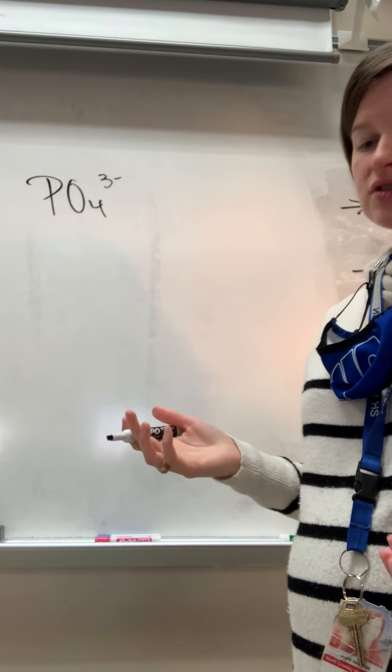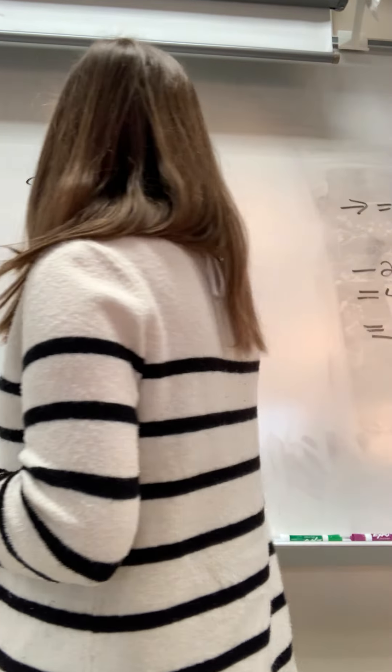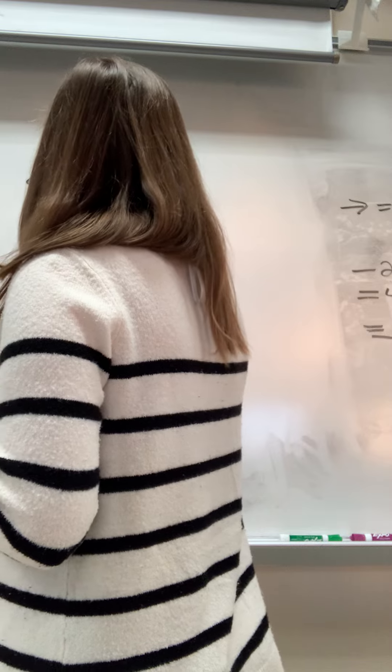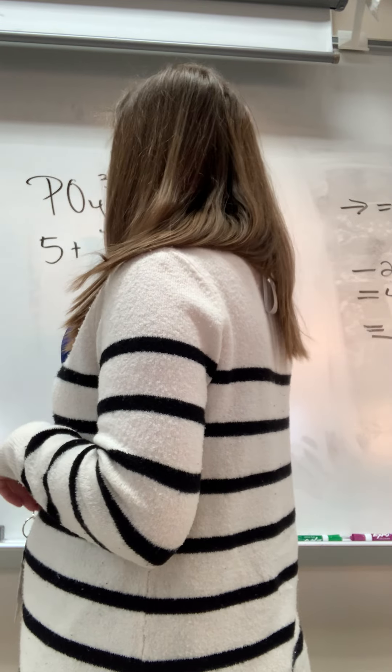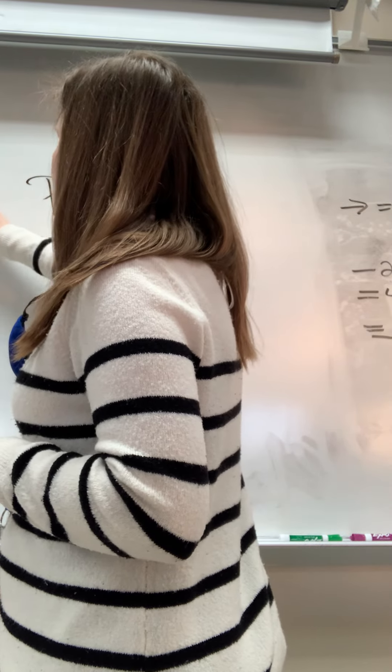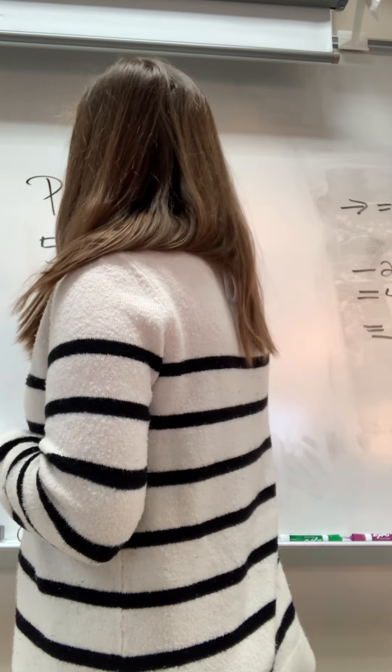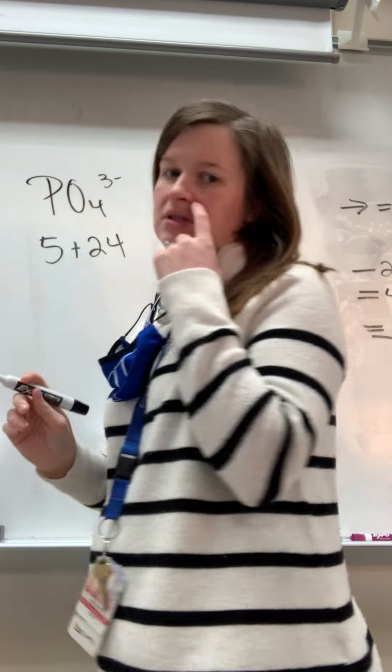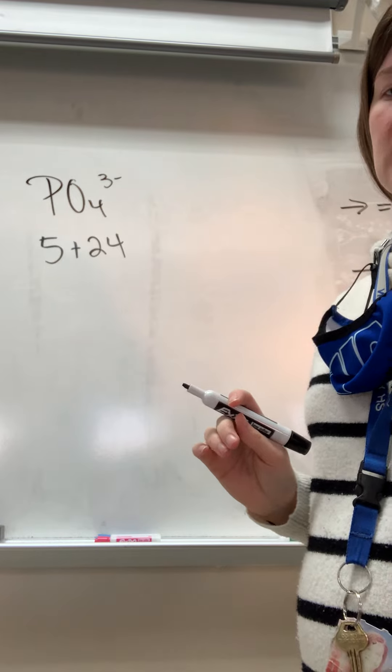Okay, so what you're going to do, your first step is covalent, so you're going to add up your bucket. So phosphorus has 5, oxygen has 6, I have 4 of them. 6 times 4 is 24, because I don't want to do 6 four times. So 24.